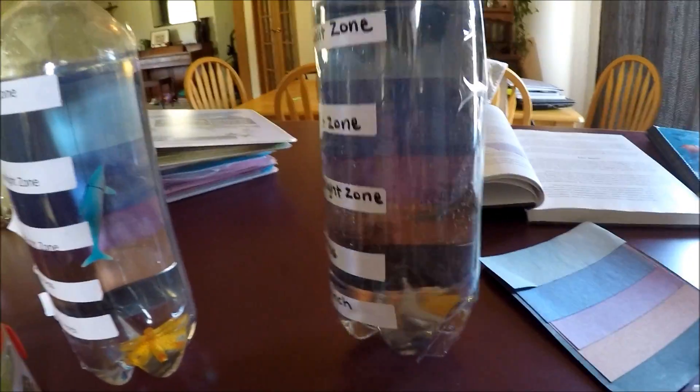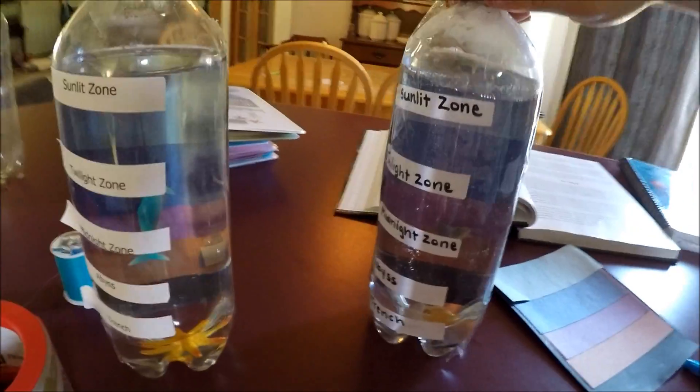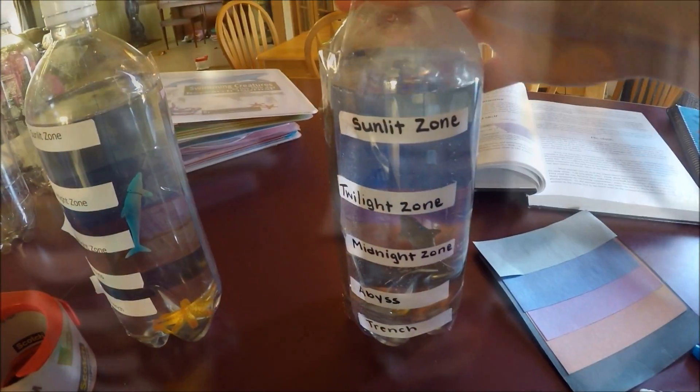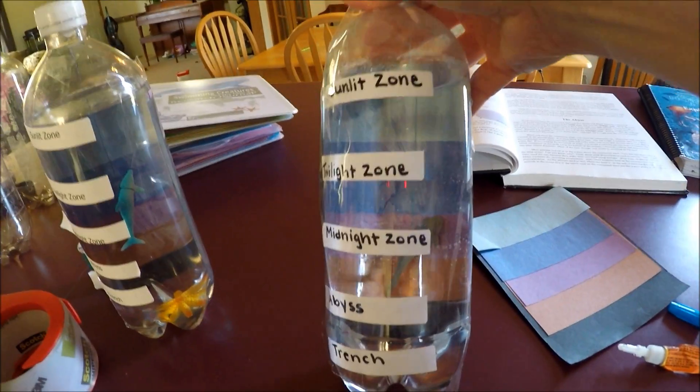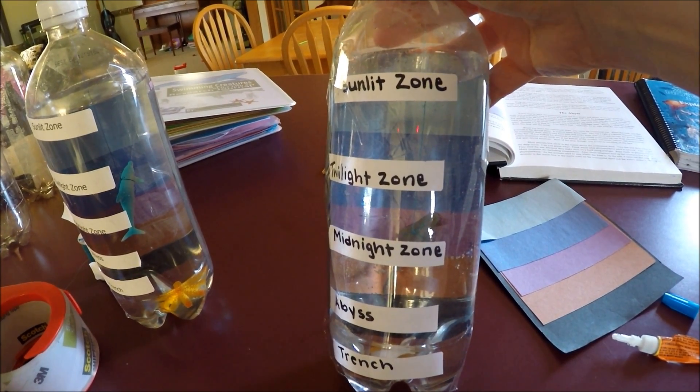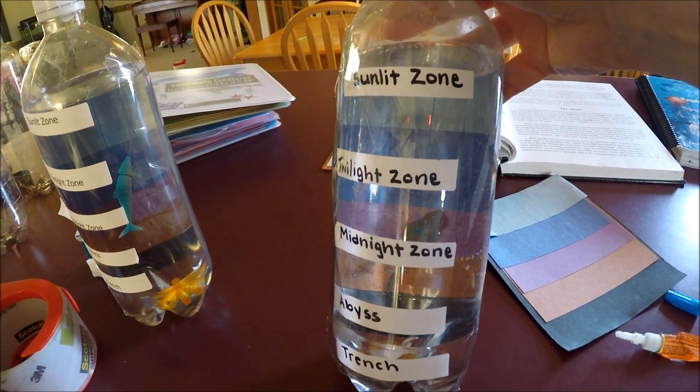And there is your ocean zone bottle. You have your shark in there, the five ocean zones, the bottom dweller in the bottom of the trench, and the colored paper on the back. This is how you make your ocean zone project. I hope you enjoyed watching. This is homesteadonabudget.com. Have a blessed day.